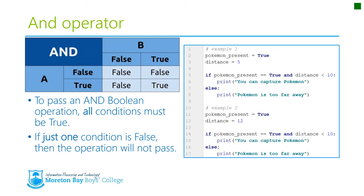Here's what that looks like in Python code. We have two examples with different variable values. We have Pokémon present, which is set to true, and the distance is 5 metres. The test is: if Pokémon present equals true AND distance is less than 10, then print 'you can capture the Pokémon', else print 'the Pokémon is too far away'. In our first example, Pokémon present is true — that gives true — and distance is 5, which is less than 10, so that's also true. True and true returns true, so it passes the condition and prints that the Pokémon can be captured.